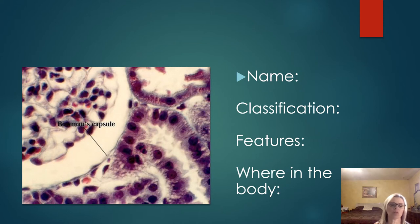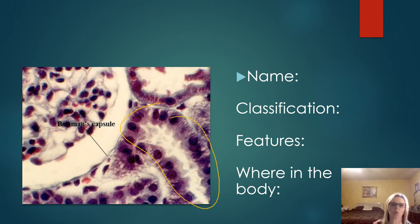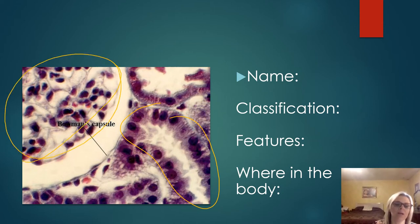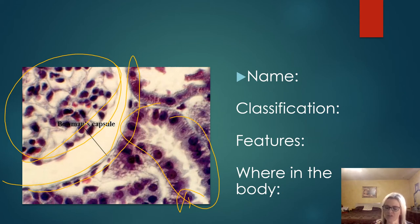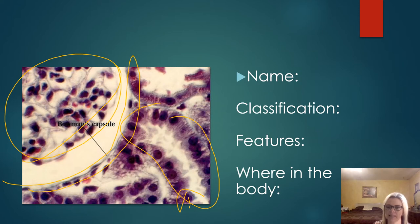Pause and name these. This is actually in Bowman's capsule — don't be thrown off. The one I'm pointing to here is lining a lumen, so that is your simple squamous epithelium. Then here I have simple cuboidal. Bowman's capsule is part of your nephron, which is part of your kidney and does filtration. That's why you need that simple squamous epithelium there — in order to filter things very easily in and out.